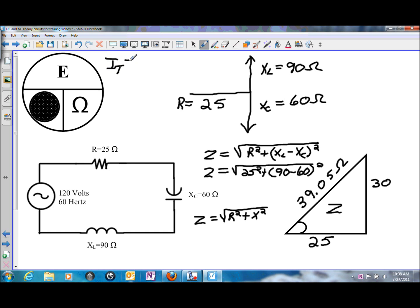So, I total will be equal to E total divided by Z, which is the total opposition, or 120 volts divided by the 39.05 ohms of impedance. And in this circuit, we will have a total current flow of 3.07 amps.